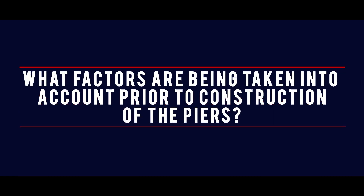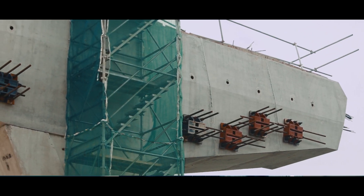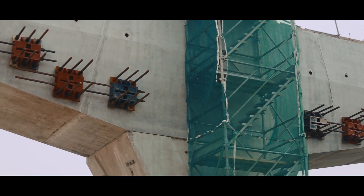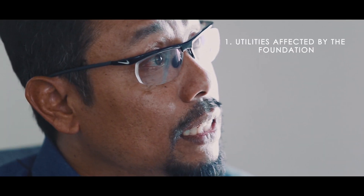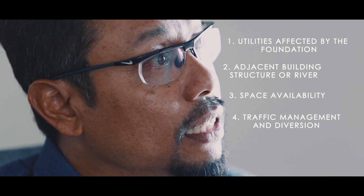What factors are being taken into account prior to construction of the PAs? Factors being considered prior to pier construction are: utilities affected by the foundation, adjacent building structures or rivers, space availability, traffic management and diversion, and last but not least, affected public or stakeholders.